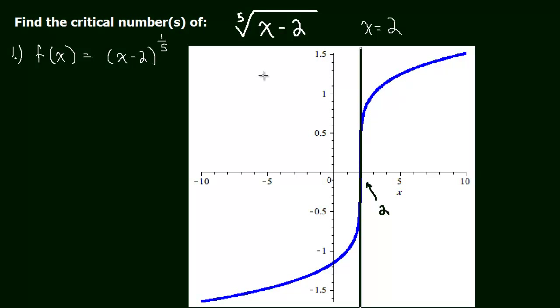But what we have is a vertical tangent line. The function is vertical, so the tangent line is vertical there. And a vertical tangent line, maybe it'll be better if I, I don't know if it helps smaller or bigger. Maybe like that. A vertical tangent line is undefined. Why? Well, let's take a look.